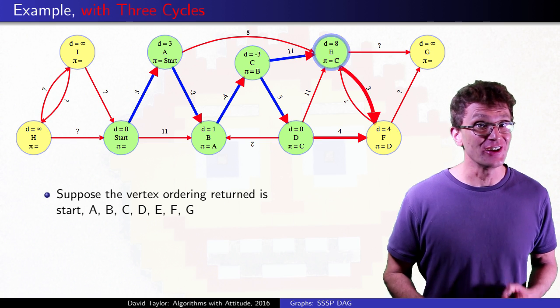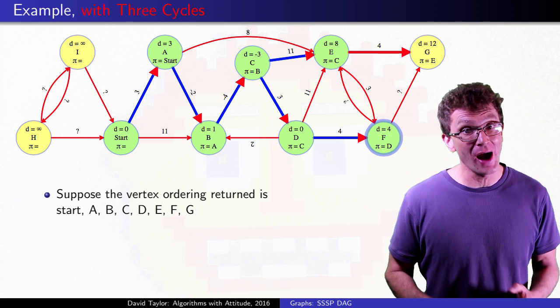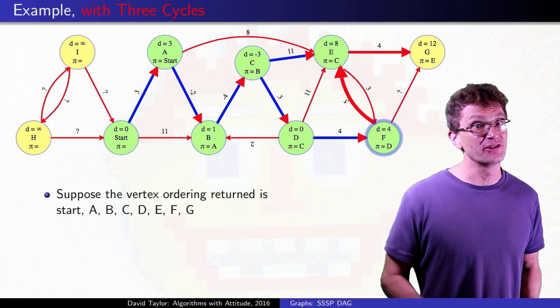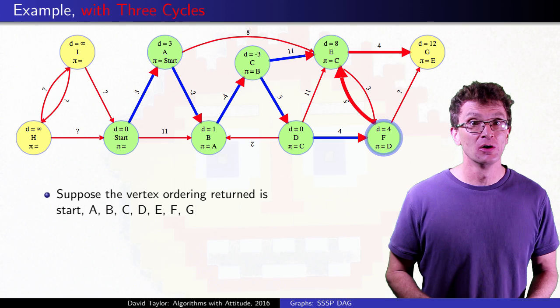What about when I get to the F to E edge? Well, if it weighs 5 like it does here, it doesn't cause problems either. When I relax it, it finds a more expensive path to E, which we can ignore.